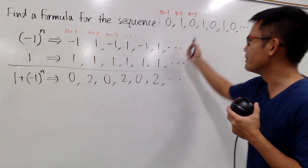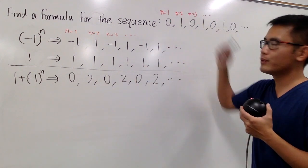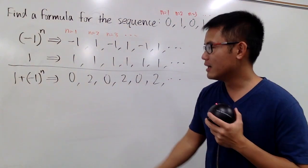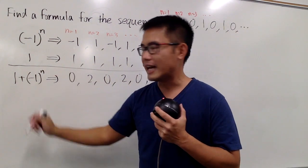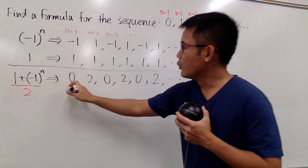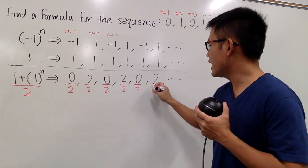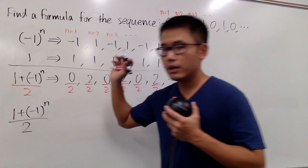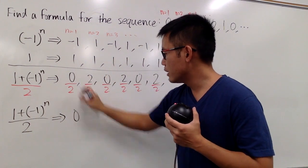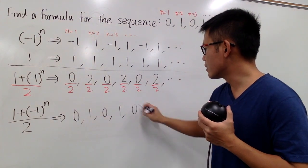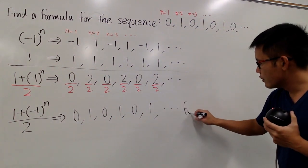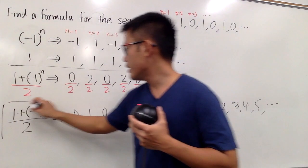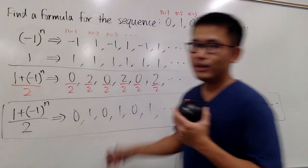You can see how this is almost the same as the original, but instead of 2 we want 1. Well, 2 divided by 2 is 1. The reason I want to divide rather than subtract 1 is because I don't want to mess up the zeros. So we divide the whole expression by 2, giving us the formula: (1 + (-1)^n) / 2. This formula will produce 0, 1, 0, 1, 0, 1, and so on, and it's valid for n equal to 1, 2, 3, 4, 5, and so on.